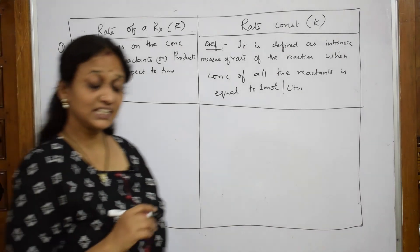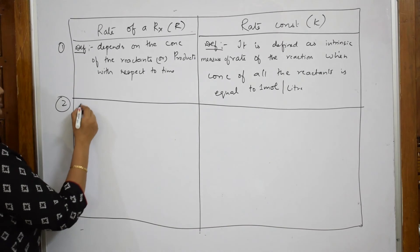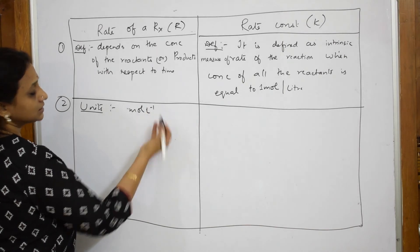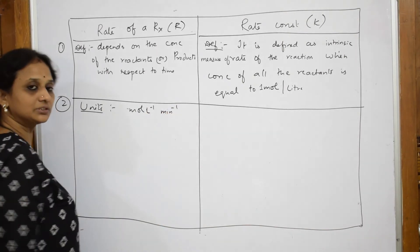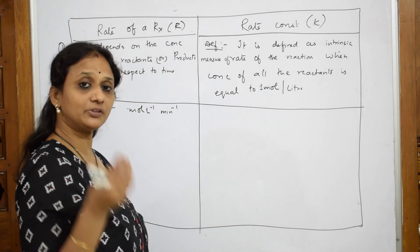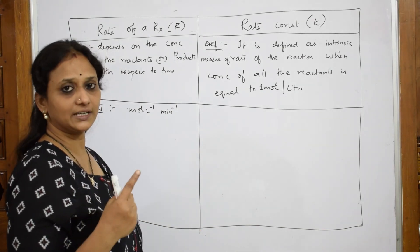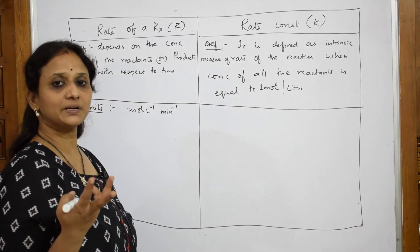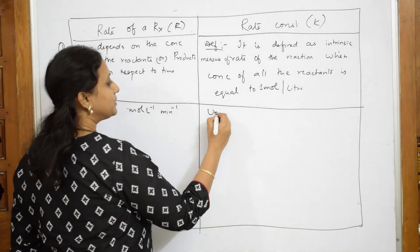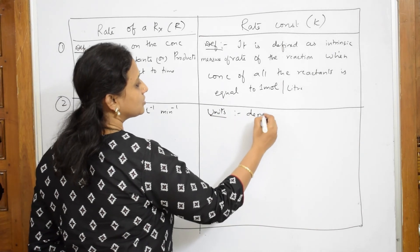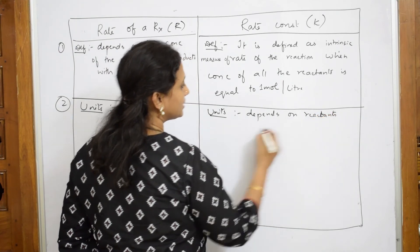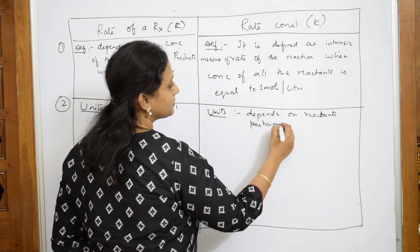Let us come to the second difference — their units. Rate of a reaction units: this is equal to mole liter inverse per minute, or minute inverse. Now, rate constant — rate constant unit depends upon the reactants participating. For first order, the unit is time inverse. For second order, the units are liter mole inverse minute inverse. So this depends upon the reactants which are participating — that is most important.